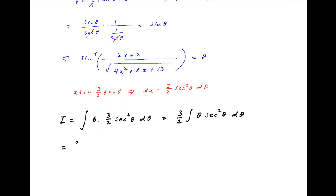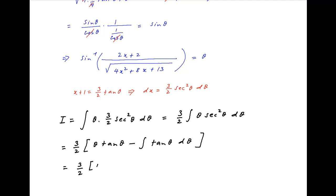Integrating by parts, we get (3/2) times [θ times the integral of sec²θ, which is tan θ, minus the integral of (tan θ times the derivative of θ, which is 1)]. This equals (3/2) times [θ tan θ minus the integral of tan θ], which equals ln of sec θ, plus the constant of integration.